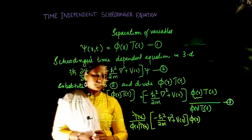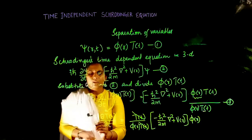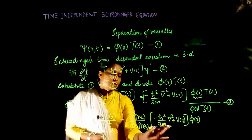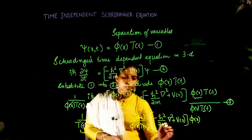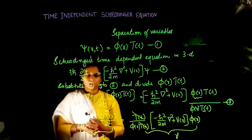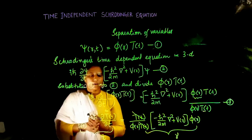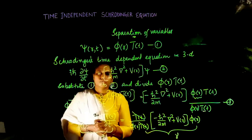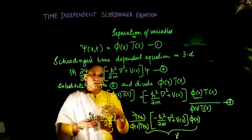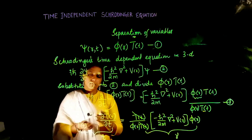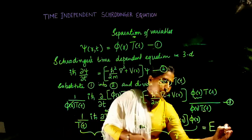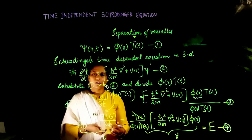We now see that the left-hand side contains exclusively the time variable, and the right-hand side contains only the variable r. The left-hand side is a function of time only and the right-hand side is a function of r only — which was the intended result of the separation of variables method. For this to hold for all cases, both sides must equal the same constant, which we call E. This is equation 4.